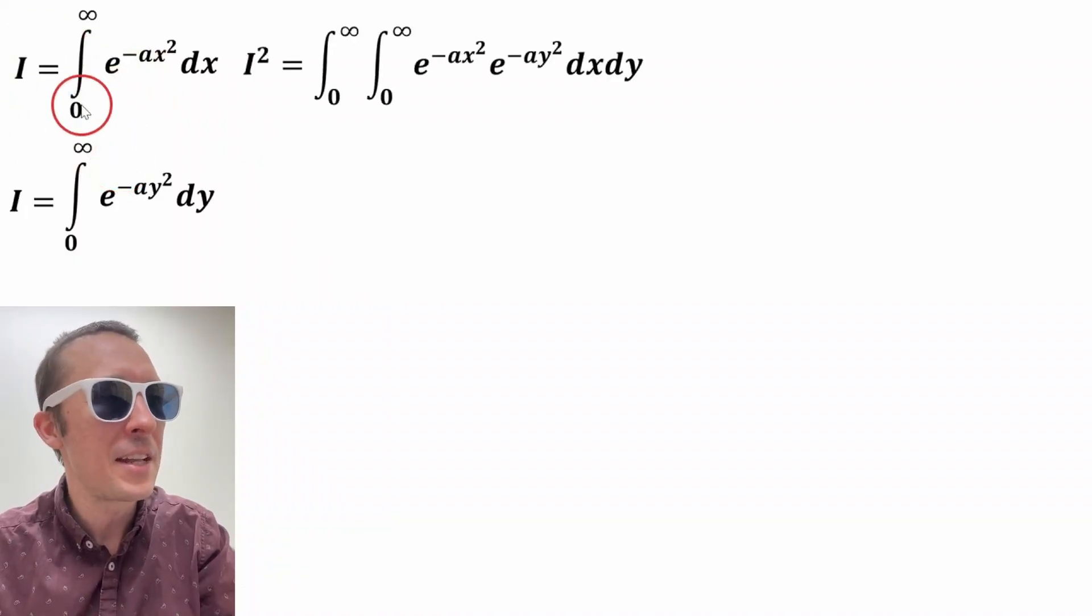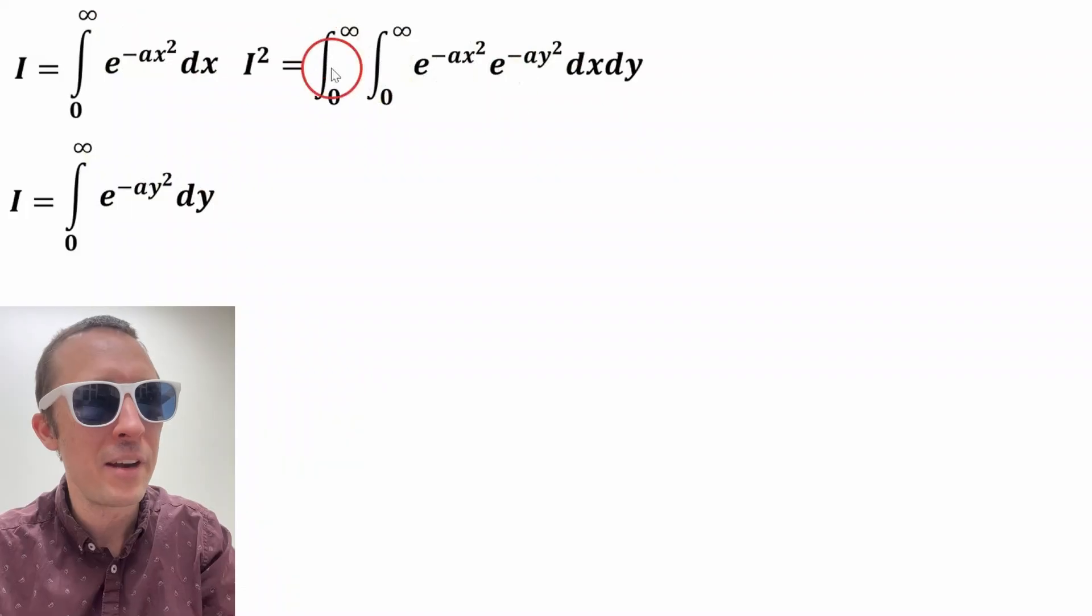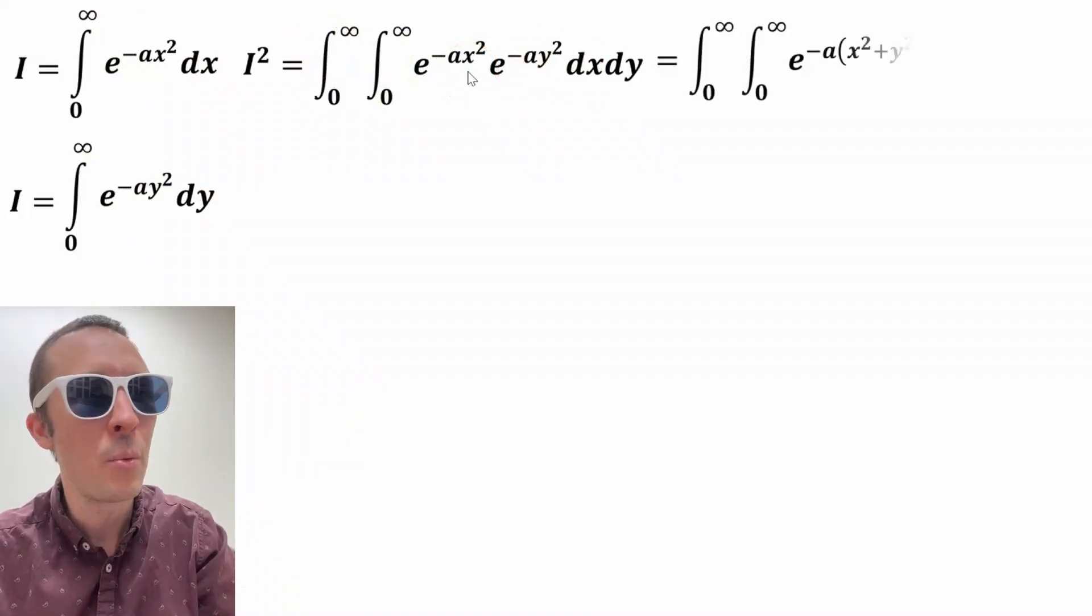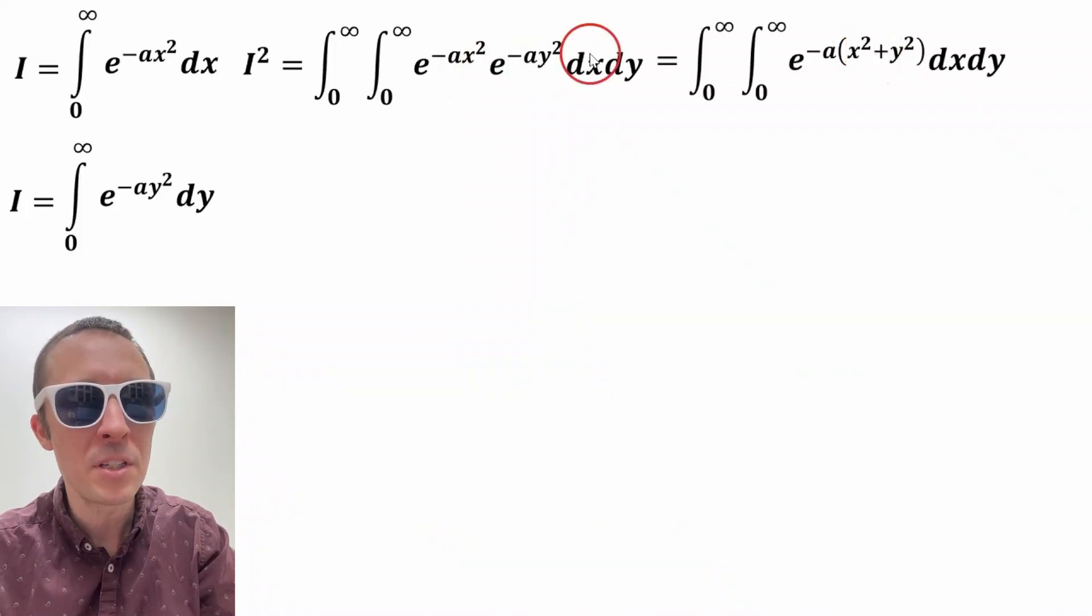The left hand side becomes I squared, and the right hand side becomes these two multiplied together. And with a little bit of rearrangement, this is what we've got right here. Now we're going to invoke an exponent law where we can add the exponents because we're multiplying the bases. Do you see that?